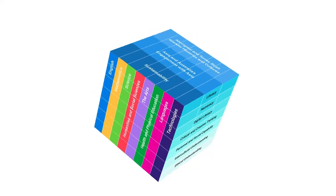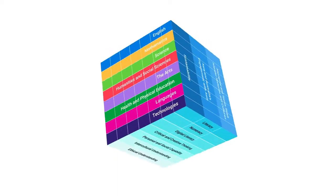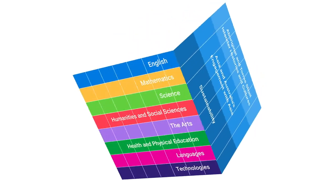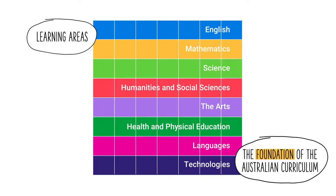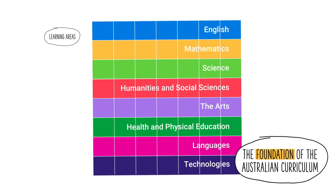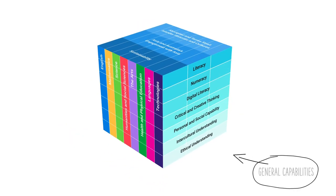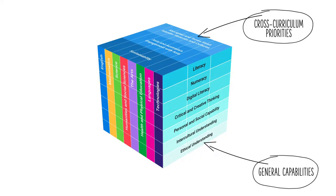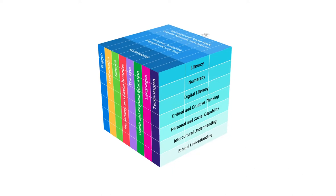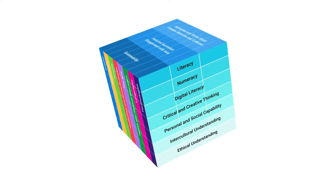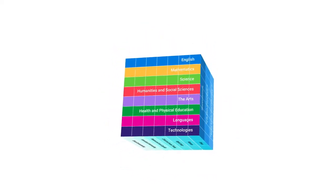The Australian Curriculum has three dimensions: learning areas, general capabilities and cross-curriculum priorities. Of the three dimensions, the learning areas are the foundation of the Australian Curriculum. They identify the essential content that teachers should teach and we want students to learn. The other two dimensions, the general capabilities and cross-curriculum priorities, are developed through the content of the learning area and aren't separate areas to be taught. These two dimensions offer opportunities to enrich and enhance the content of the learning areas.